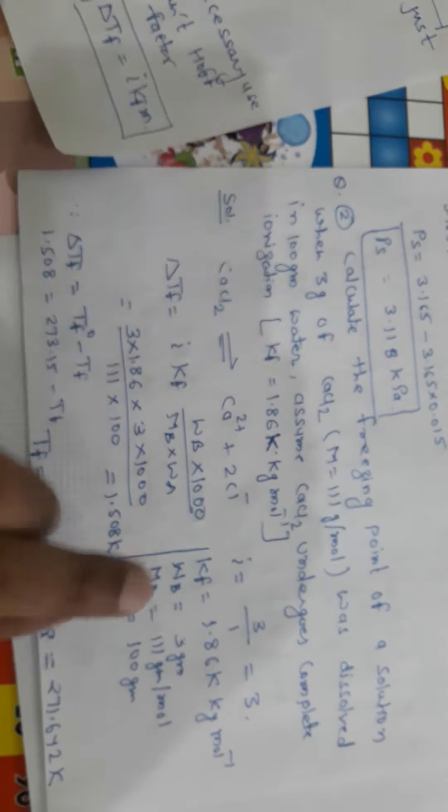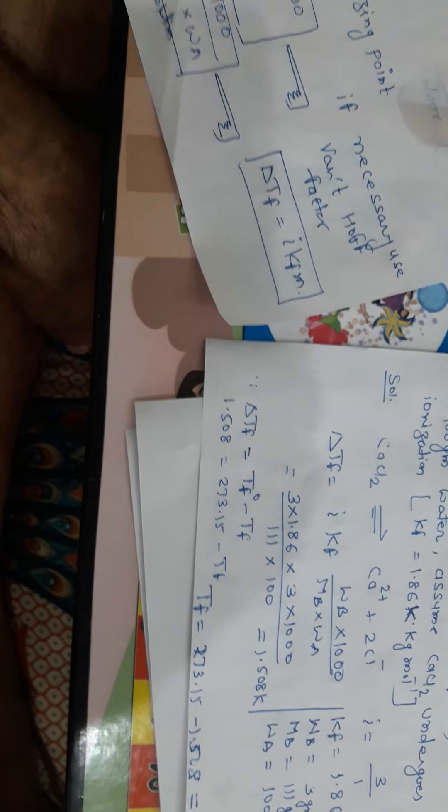Mb, molar mass of the solute, that means molar mass of CaCl2, which is equal to 111 gram per mole. And Wa, mass of the solvent. The mass of the solvent is 100 gram because it is dissolved in 100 gram of water. When we put all those things in the formula, we will get the value of ΔTf is 1.508.